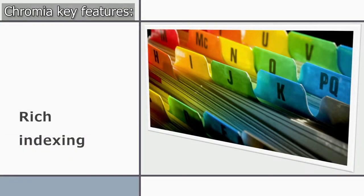Rich indexing is another key feature of Chromia. It means that dApps can retrieve needed information directly from nodes that are running the application. In contrast, other blockchains need third-party tools for such retrieval, which increases complexity and centralization.